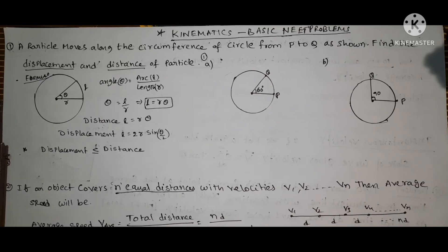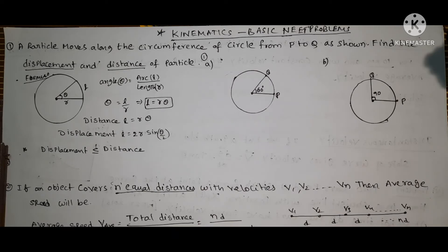The first concept is distance and displacement. As we know, distance means the length between initial and final point, whereas displacement means the shortest length between initial and final point. So how can you determine distance and displacement in the case of a circular path?